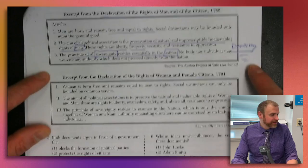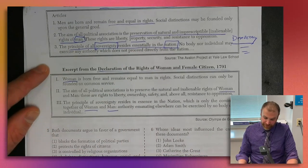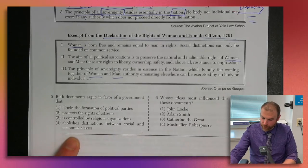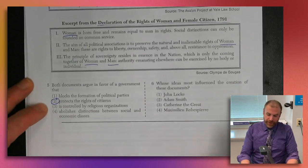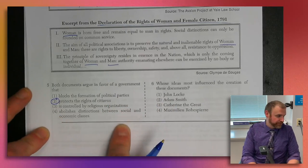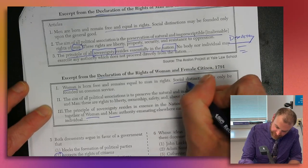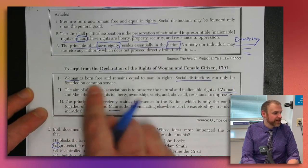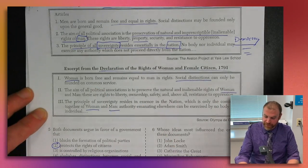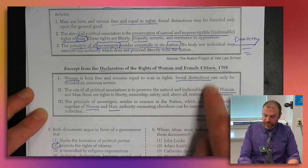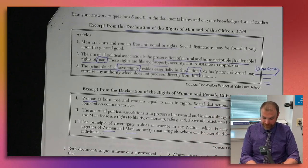The second source is basically the same thing — only expanding protections to women as well as men. Both documents argue in favor of a government that protects the rights of citizens. There's nothing in the documents about political parties, religion, or abolishing social classes. The source does mention that social distinctions can only be founded on common service, so they're not banning them — just tying them to merit.